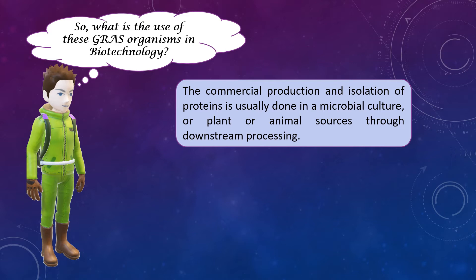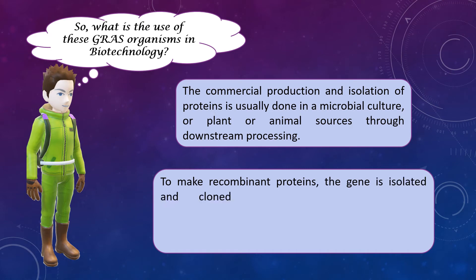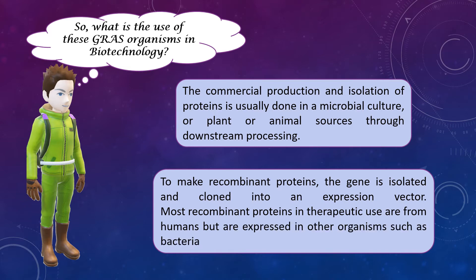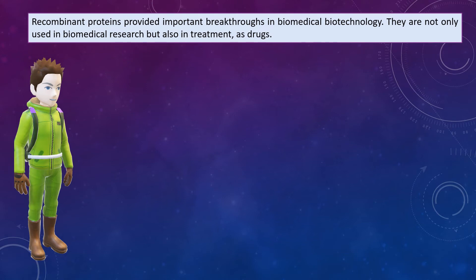As we have already studied in recombinant DNA technology, to make a recombinant protein, a gene is isolated and cloned into an expression vector. Now, as most of these recombinant proteins are for human therapeutic use but cannot be extracted from humans directly, these are produced in organisms listed in the GRAS list — organisms such as bacteria, yeast, fungi, etc.